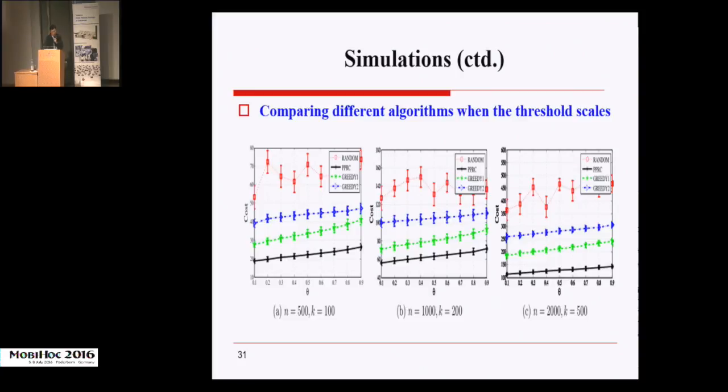And the Random algorithm randomly selects users. We first study how the performance of different algorithms is affected by the threshold theta set for controlling the quality of the selected users. We vary the value of theta from 0.1 to 0.9 with an increment of 0.1 in each subfigure. We can see that PPRC, our algorithm, outperforms the other algorithms dramatically. Meanwhile, the costs output by all algorithms except Random increase when theta increases.